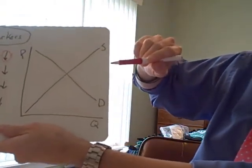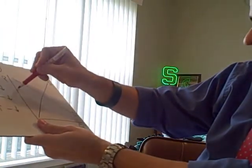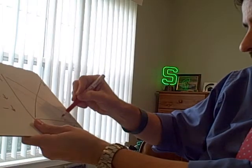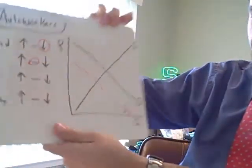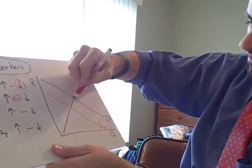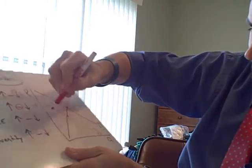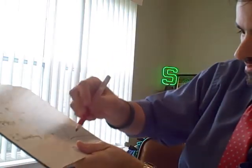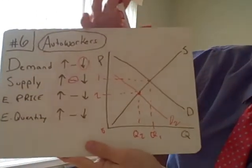Supply of autoworkers didn't change. Demand, we need less autoworkers because we need to make less cars. So we're demanding less. Here's my demand line right there. We're demanding less. We need to shift that left. Looks like that. Market price. Here's the first one. Market price. Second one.